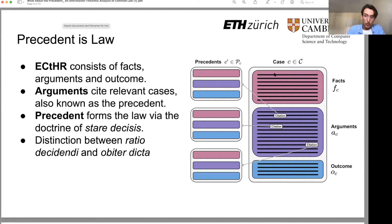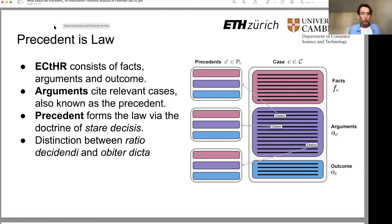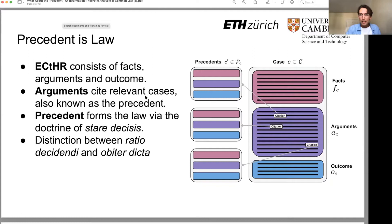When I talk about precedent, I'm referring to cases that are cited in the arguments of the judges as part of the case. These citations point to cases which are similar to the case at hand, and each of those cases can be divided into facts, arguments, and outcome. This also raises the idea of ratio decidendi. We conflate it with the most literal meaning of 'reasons for decision,' which sidesteps one of the great discussions in jurisprudence about what the reasoning actually is. For us it boils down to a discussion between facts and arguments.